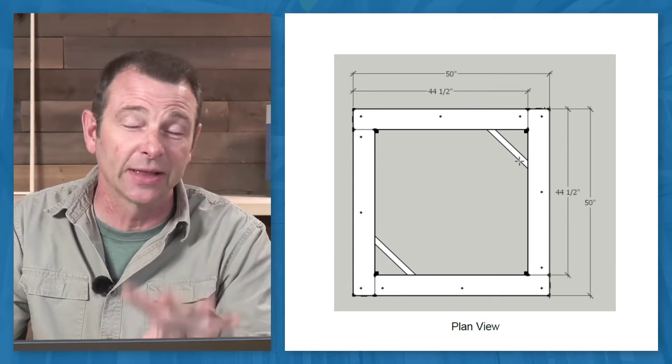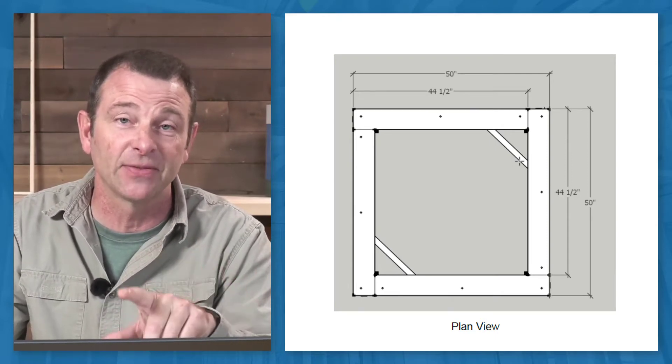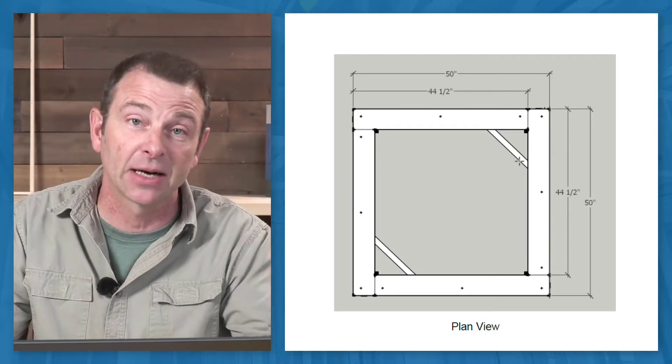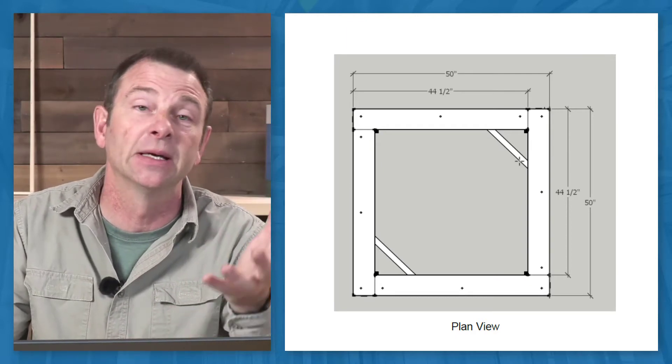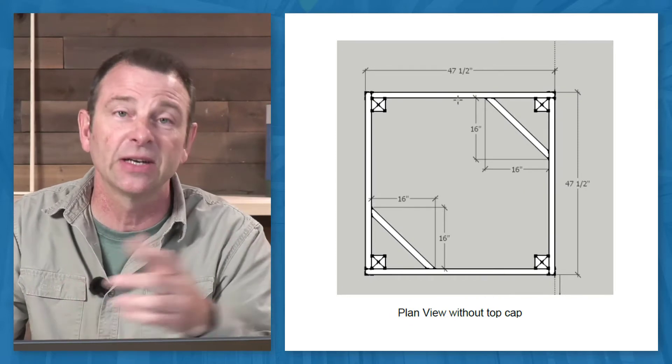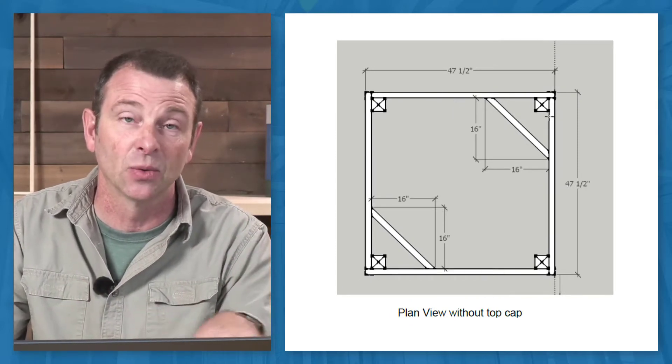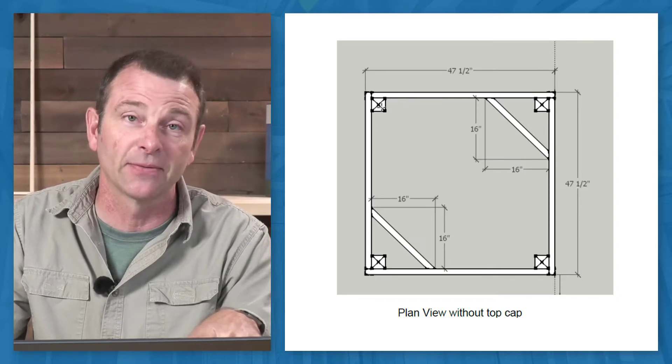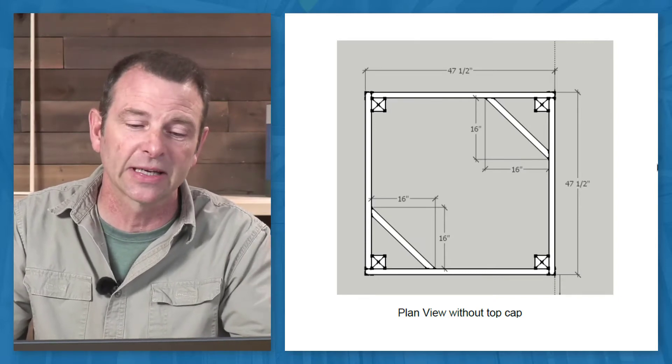The overall dimensions with the top cap is 50 inches by 50 inches, but the box itself that's below the cap is that four foot by four foot dimension. And also what you see here, if you remove that top cap, which this plan view does, you see your four by four posts which hold the corners together.